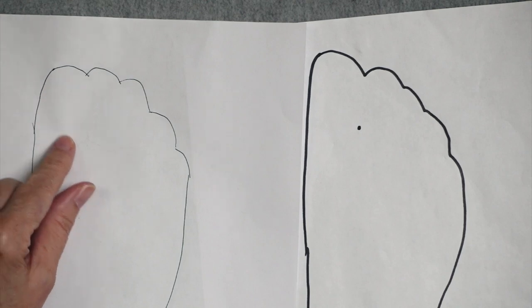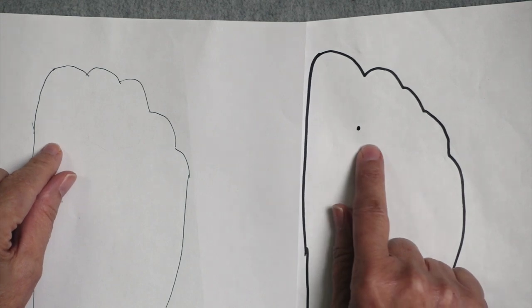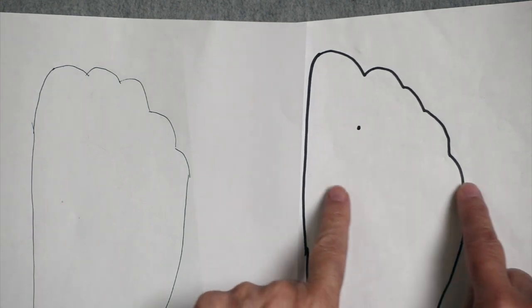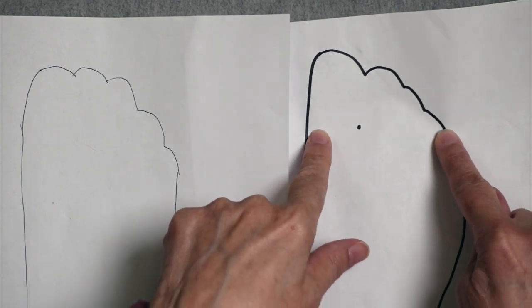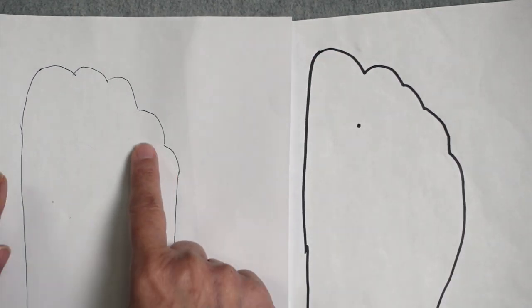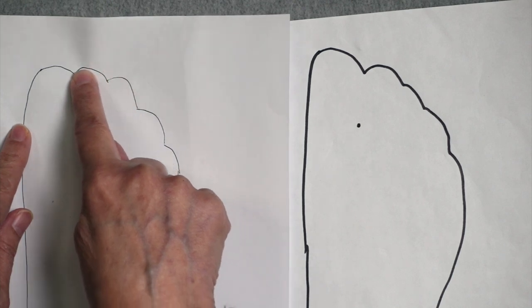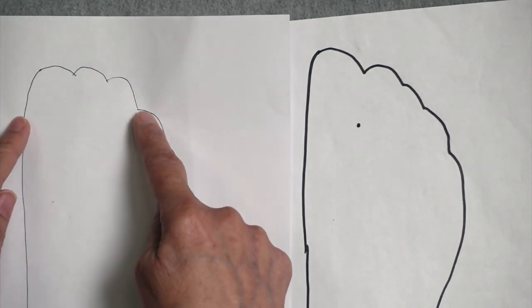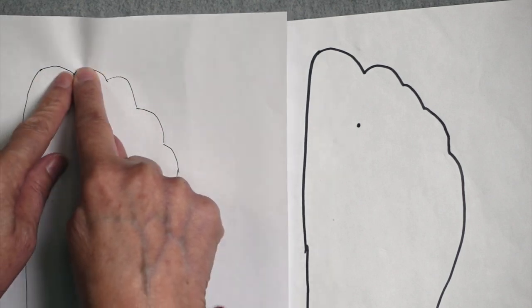Rosemary really needs a sock toe that's maybe an inch and a half to an inch and three quarters in length, where Helen needs one that's more like two and a half inches in length, because her foot just starts getting narrower much sooner, and there's a much more gradual narrowing of her foot, where my friend Rosemary starts out getting narrower, and then her final three toes are all the same length, and so it needs to get dramatically smaller all at one time.